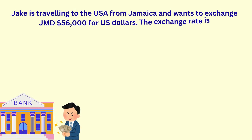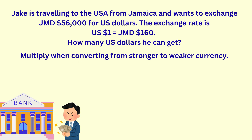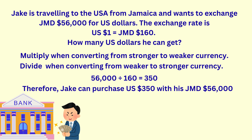Let's solve a currency exchange problem. Jake is heading to the USA from Jamaica and wants to exchange 56,000 Jamaican dollars for U.S. dollars. The exchange rate is one U.S. dollar equals 160 Jamaican dollars. When doing money conversion problems, we multiply by the rate if converting from a stronger to a weaker currency, and divide when converting from a weaker to a stronger currency. In this case, the U.S. currency is stronger. So we divide Jake's 56,000 Jamaican dollars by the exchange rate of 160. So 56,000 divided by 160 is 350. Therefore, Jake can purchase 350 U.S. dollars with his 56,000 Jamaican dollars.